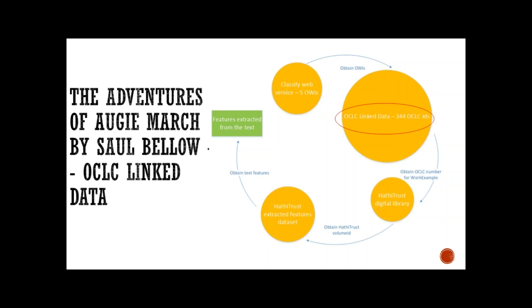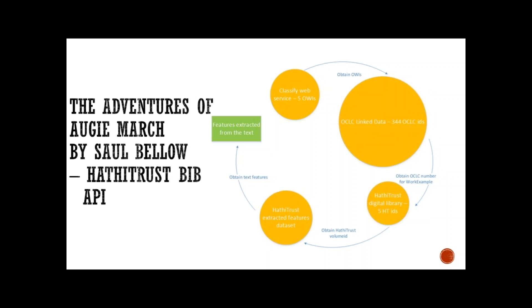Each identified OWI would then be sent to OCLC's Linked Data Works Entity Service to retrieve work entity metadata in RDF. Each RDF record can be processed to extract all work example URIs for an associated work, and OCLC numbers can then be extracted from these work example URIs. In this example, OCLC record numbers representing 344 catalog manifestations are identified in this step.